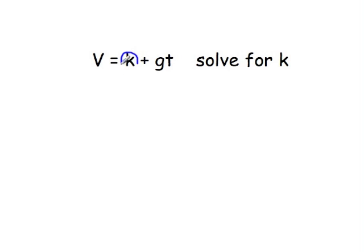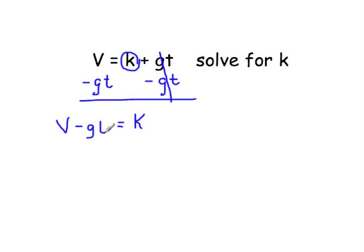To solve this for K, circle K. Now this says K plus the quantity G times T. To get K alone, we have to think about this is K plus something. To undo that addition, we need to subtract the entire quantity GT from both sides. The negative GT and positive GT on the right side cancel out, and we get K alone. On the right side, V and GT are not like terms. All we can do is write it as V minus GT. That is our equation solved for K.